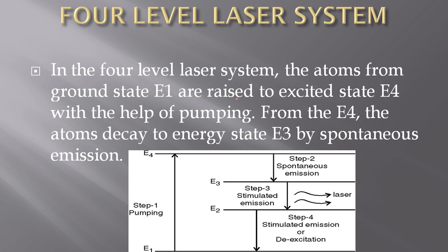4 level laser system. In the 4 level laser system, the atoms from ground state E1 are raised to excited state E4 with the help of pumping source. From the E4, the atoms decay to the region E3 by spontaneous emission. You can see here.